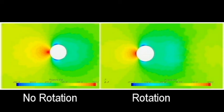The image on the left shows a non-rotating ball. The pressures along the top and bottom are symmetrical about the centerline.